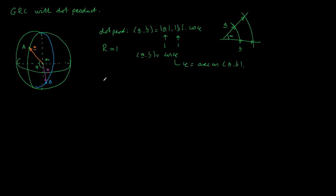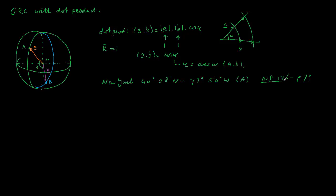Let's have a look at the coordinates. New York has coordinates 40 degrees 20 minutes north and 73 degrees 50 minutes west — point A. This is from the NP-136 on page 79. The NP-136 is the Ocean Passages of the World; most ocean-going vessels will have it on board, and there you can find all the smart routes between different points. The second point is Cape Agulhas, which equals 35 degrees 05 minutes south and 20 degrees 00 minutes east — point B.